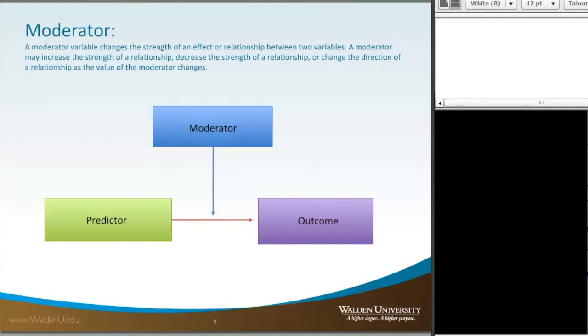The way that the moderator works is, as the moderator itself increases in value, it actually changes the coefficient of the model. So if the moderator is low, we have a certain value, and the moderator increases to a middle range, we have a different value, and at the higher end of the moderator, we then have a third value.